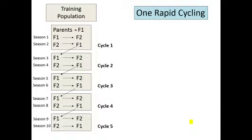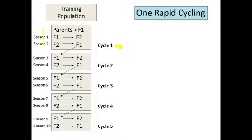This shows the same thing diagrammatically. Here is season one and season two — you complete those, you've completed one cycle of genomic selection. Seasons three and four, you do the same thing, so you've completed the second cycle.